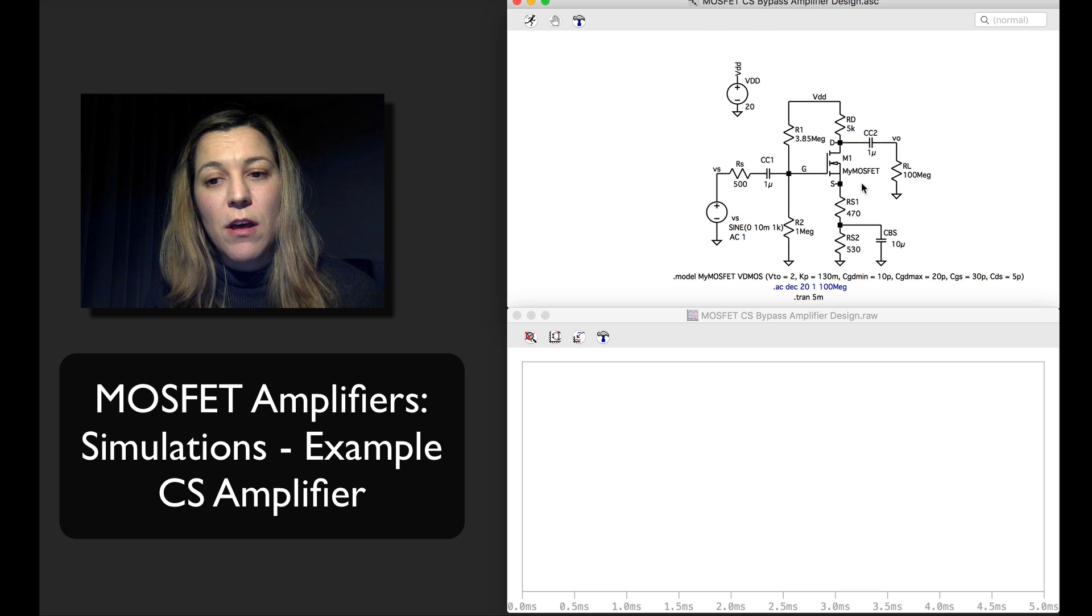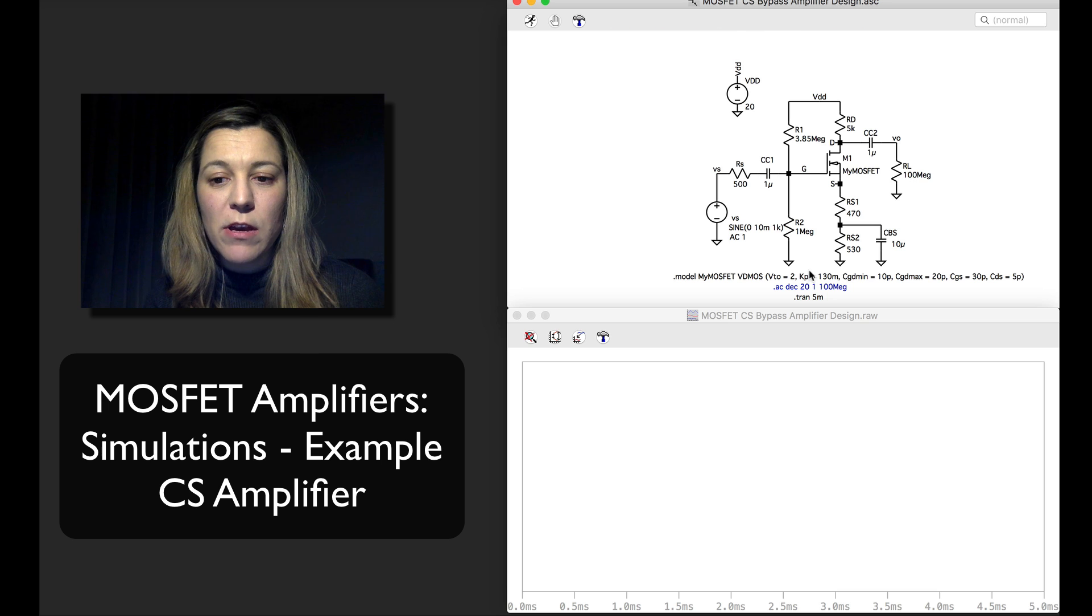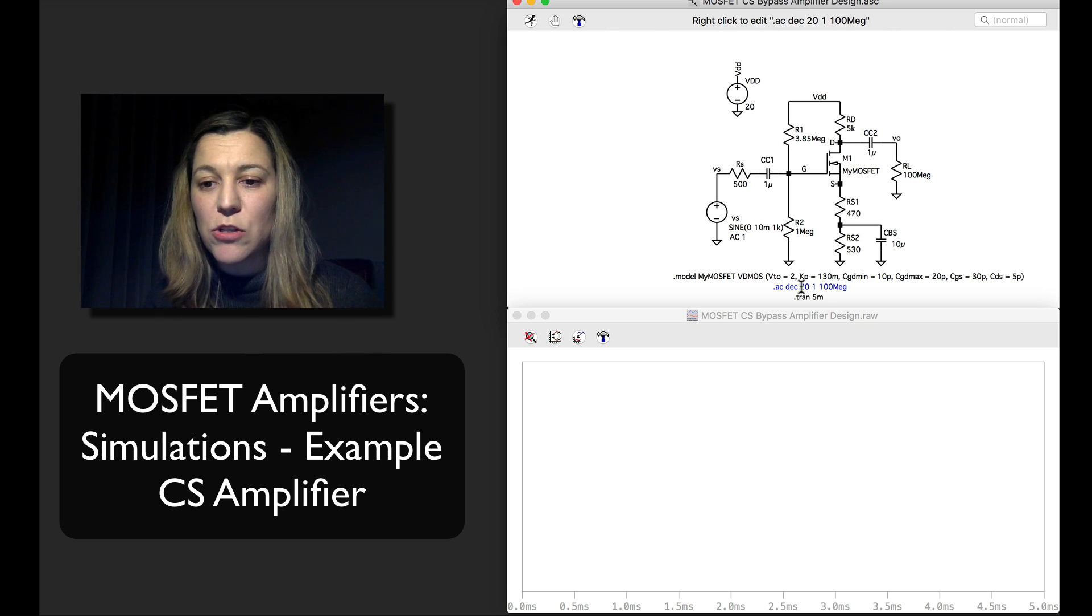Notice that I have modeled my own MOSFET with essentially the right value for threshold voltage, the value that we were given in our design problem, for the parameter K, the MOSFET transconductance parameter, and then I have entered my CGD, CGS, and CDS values.